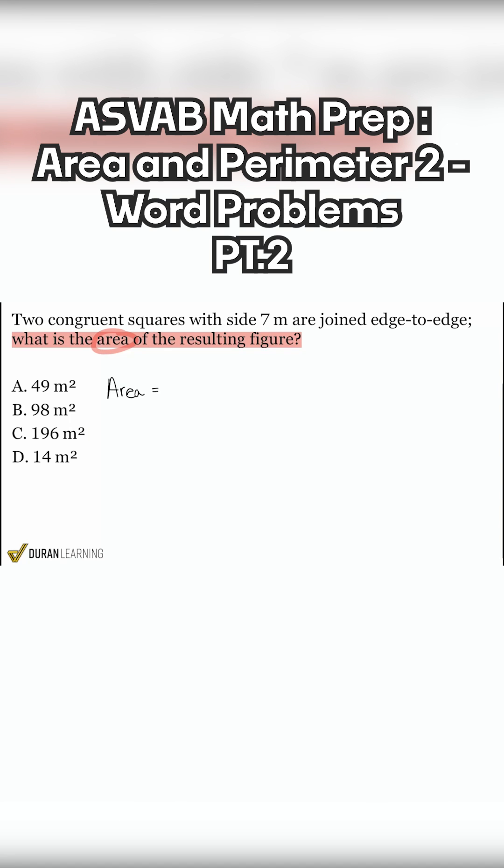But just like the previous question, it says two congruent squares. So congruent meaning the same. So two squares that are the same with a side of seven meters are joined edge to edge.